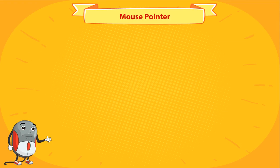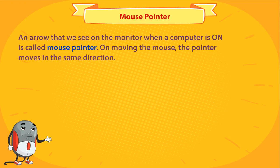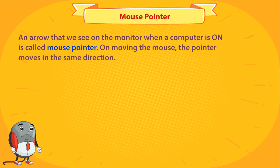Mouse pointer. An arrow that we see on the monitor when a computer is on is called the mouse pointer. On moving the mouse, the pointer moves in the same direction.